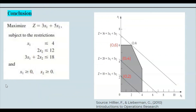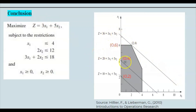To wrap up: using the given objective function z = 3x₁ + 5x₂, we graphed the three constraints to find the feasible area. There were two methods to find the maximum Z value — substituting corner coordinates into the objective function, or using the graphing method. We found the maximum z = 36 at corner (2,6), and the slope of the objective function lines is -3/5.